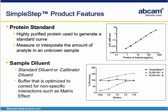Every Simple Step ELISA will also include a sample diluent, alternatively referred to as a standard diluent or calibrator diluent. This is a specially formulated buffer optimized to correct for nonspecific interactions such as matrix effects in an immunoassay. Simple Step sample diluents generate maximum recovery of target analyte in a variety of sample types. As seen in the figure on the right, when compared to two other ELISA kits, Simple Step ELISA assays have near 100% recovery of target analyte across a five-point serial dilution.